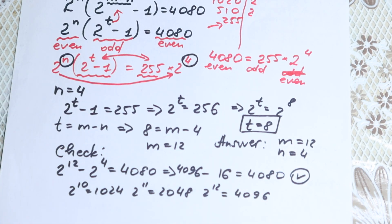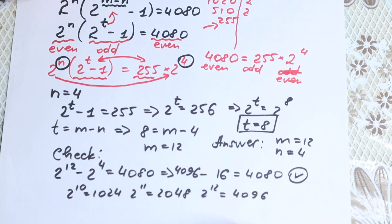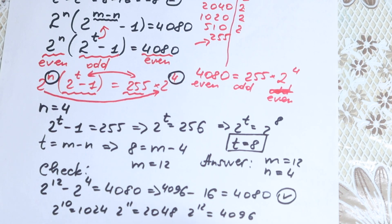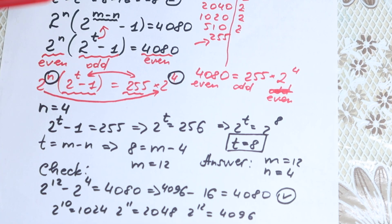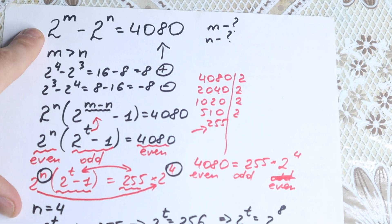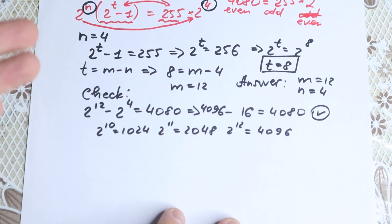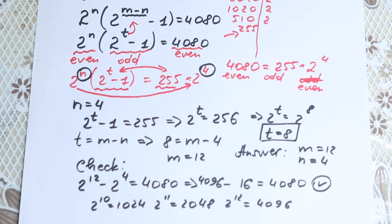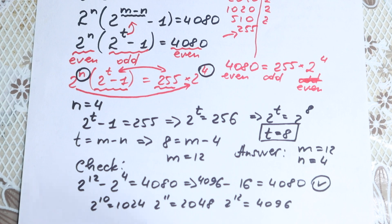But math is not about inspection — you should solve it step by step. You cannot just write m equals 12 and n equals 4 in one or two lines without showing work. Solving with logarithms is much more complicated here. This step-by-step factoring approach is probably the best solution to this problem. I hope you understand this explanation.